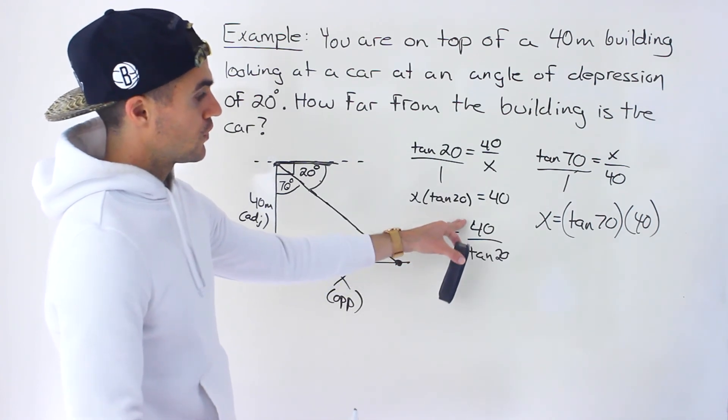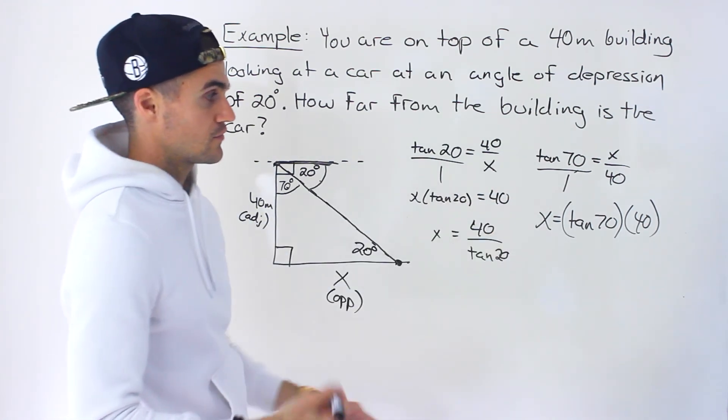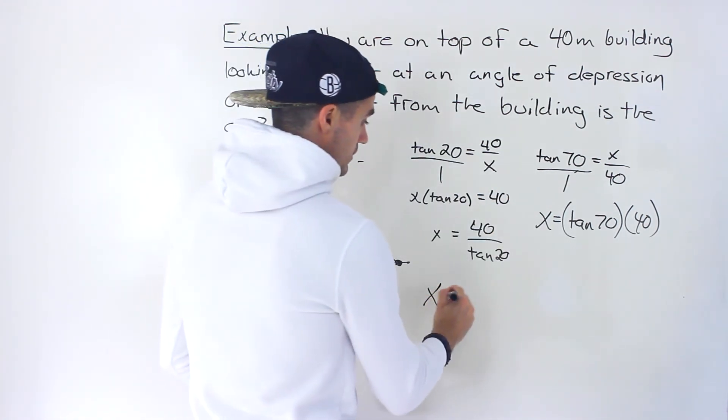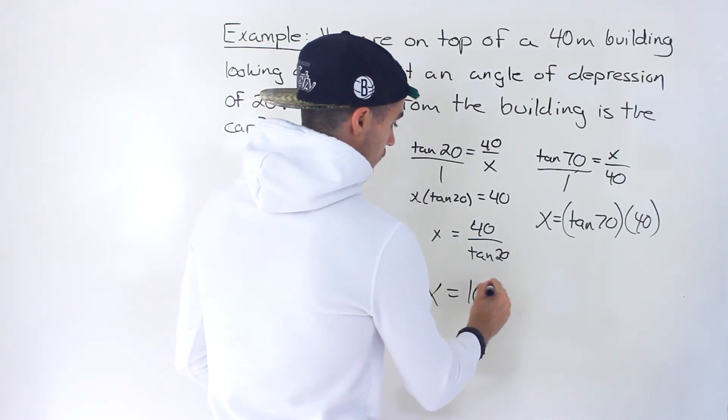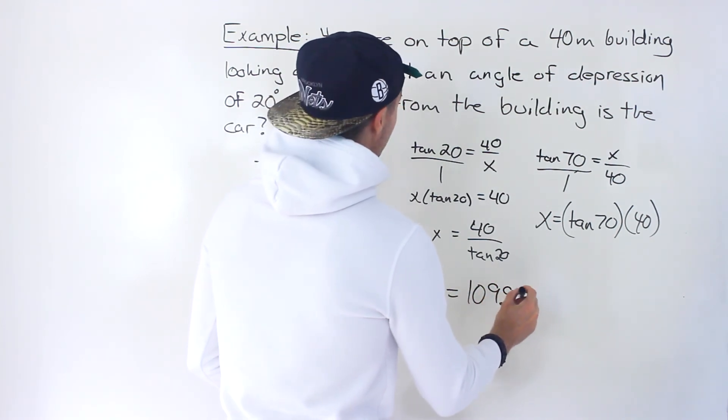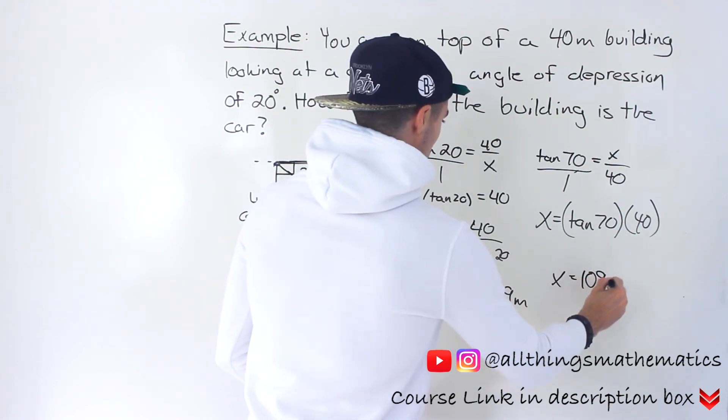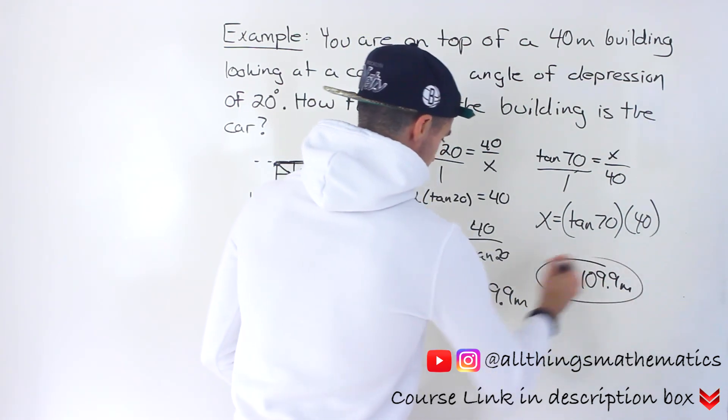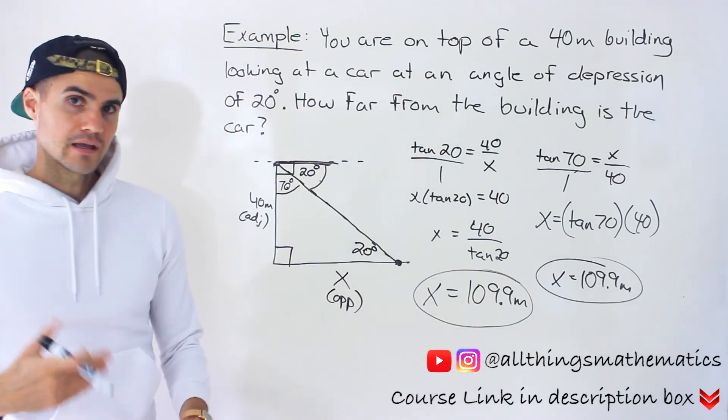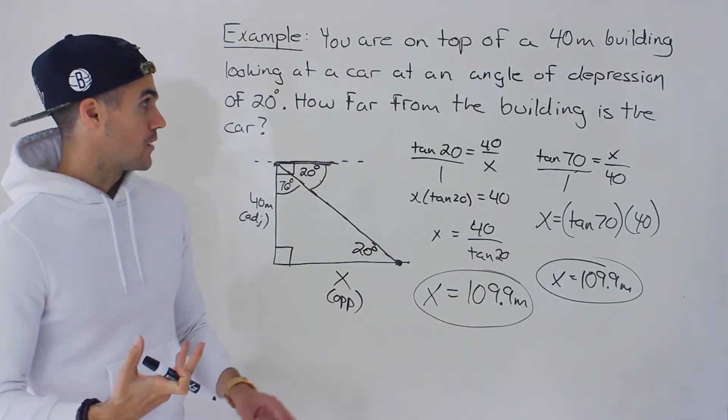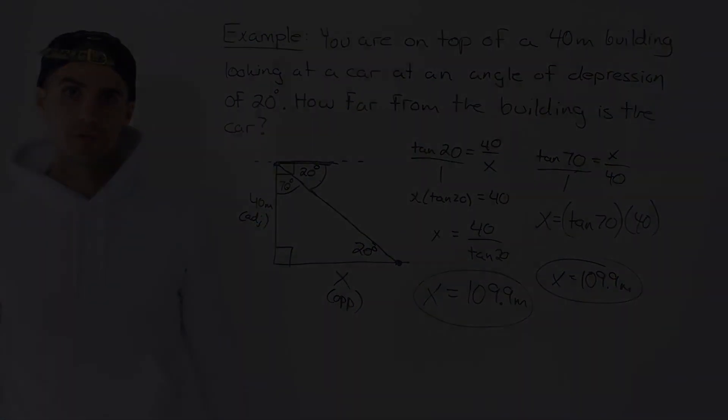Now, whichever calculation you do, 40 divided by tan 20 or tan 70 times 40, you would still get that same x value of 109.9. This is what meters, right? You'd get 109.9 meters. So whichever way you do it, that right there ends up being the distance from the car to the building.